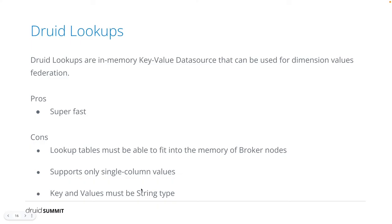Now we are clear about the problem and the difference between facts and type 1 dimensions. We are going to talk about a few approaches we explored to solve the problem. Druid lookups is an experimental feature that replaces dimension keys with dimension values in join-like queries. The dimension federation happens in the memory of the Druid broker, so it is super fast, which also means that the lookup tables must be able to fit into the memory of broker, so the size of lookup tables are limited by hardware. Druid lookups supports only single column values — if your dimensions have multiple columns, this solution doesn't work. The Druid lookups keys and values columns must be string types; if you have other types of columns like integer or long, Druid lookups also doesn't work.